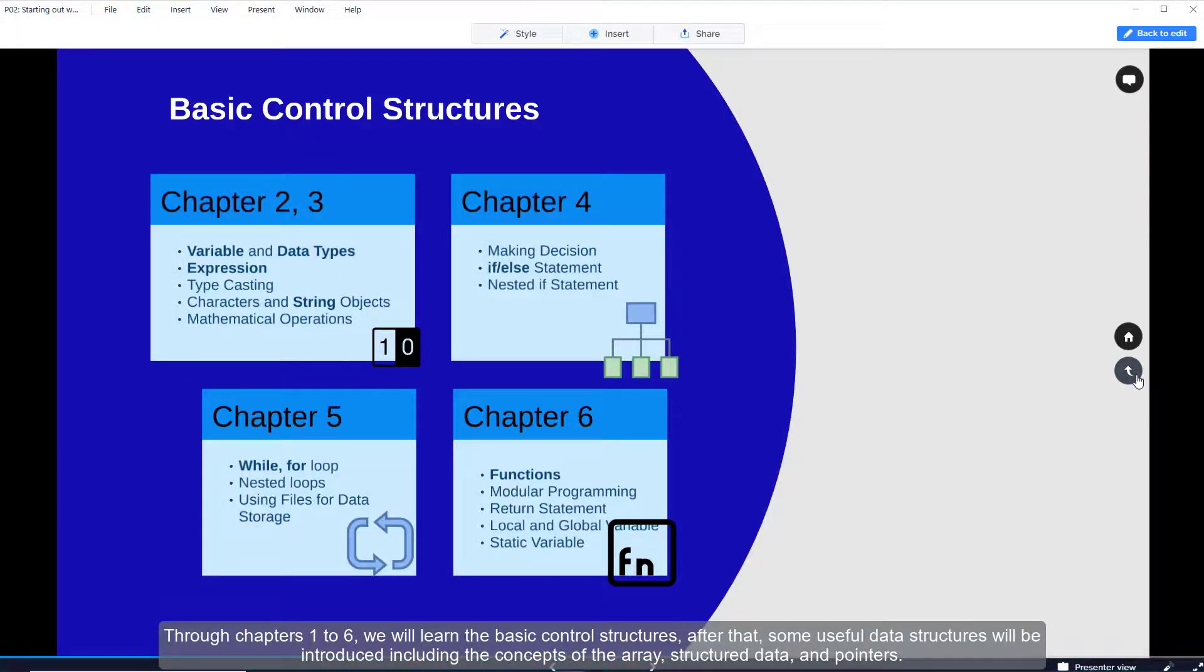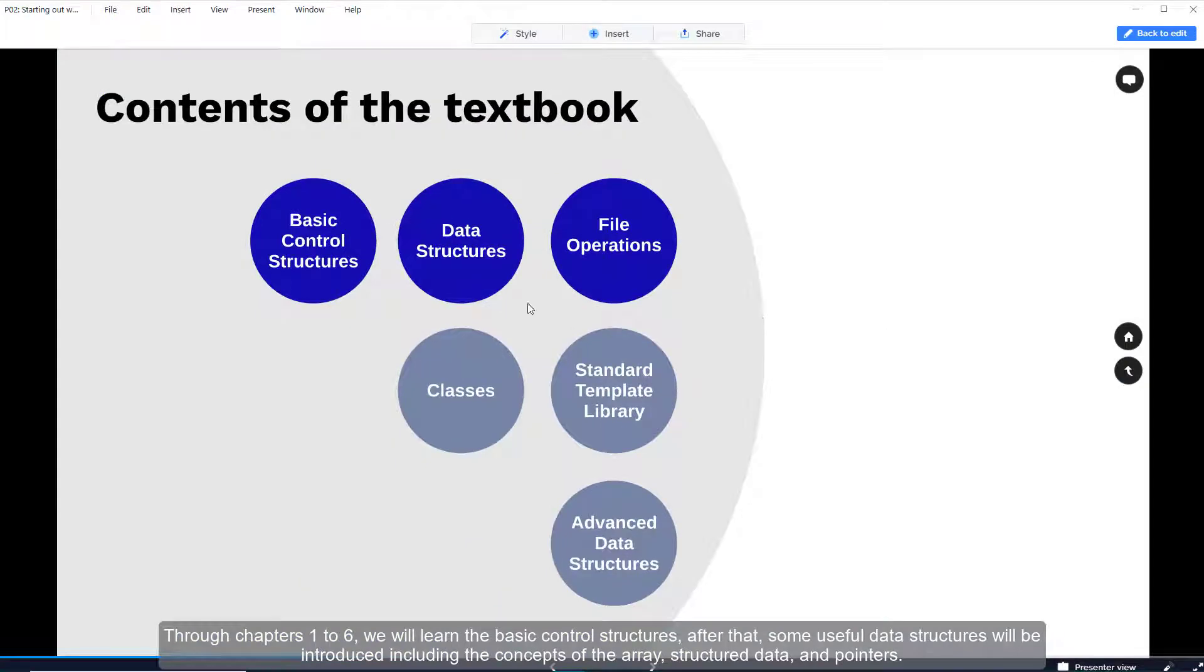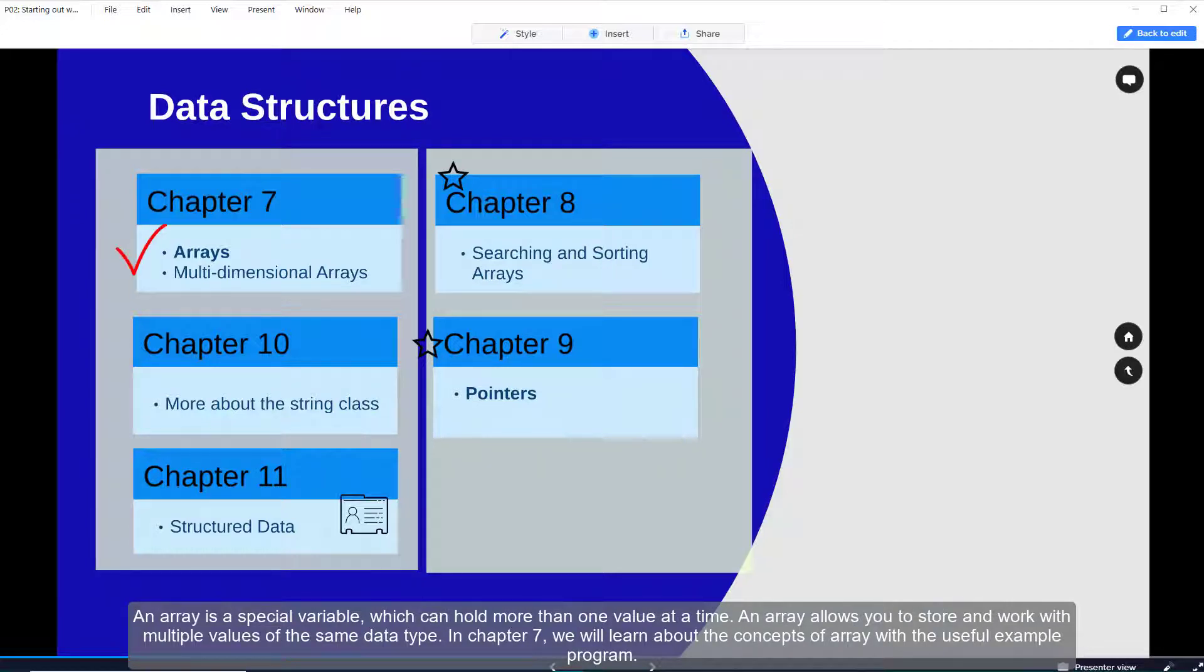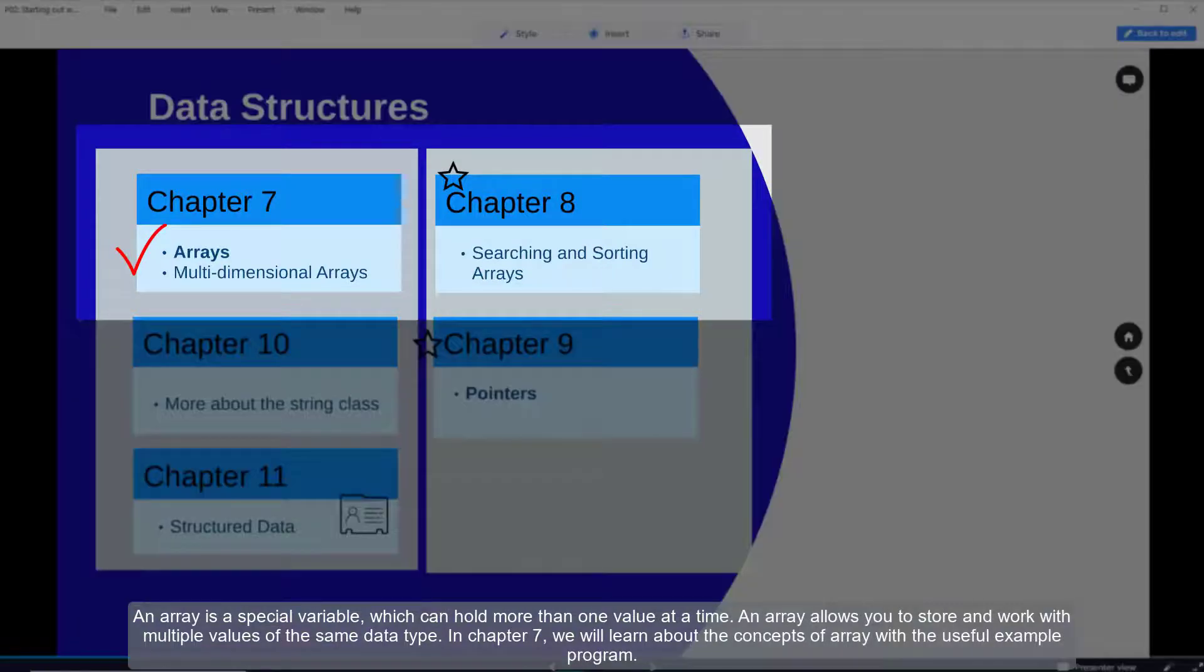After that some useful data structures will be introduced including the concept of the array, structured data, and pointers. An array is a special variable which can hold more than one value at a time. An array allows you to store and work with multiple values of the same data type. In chapter 7 we will learn about the concept of array with useful example programs.